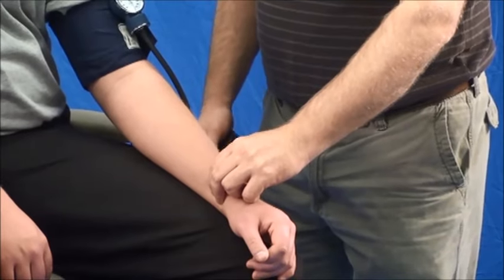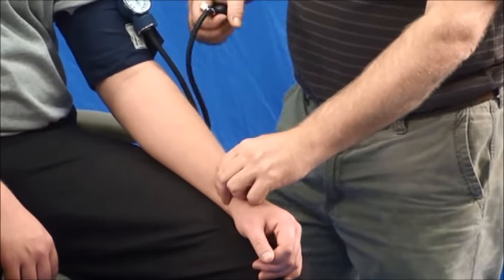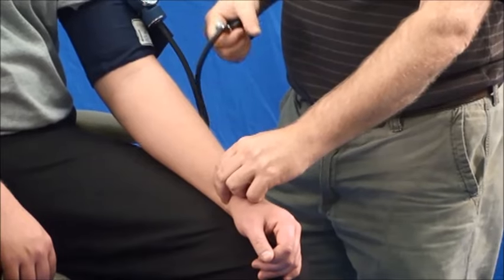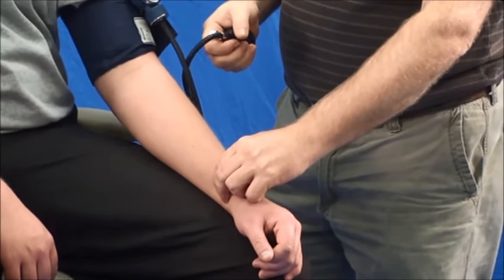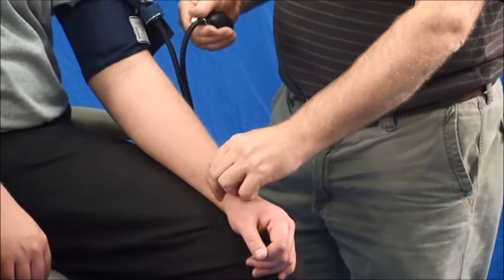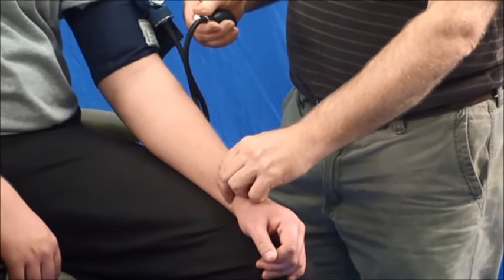Feel for a pulse again, a radial pulse. As I pump it up, I will continue to feel it and at the point where it goes away, I'll add about 20 or 30 millimeters of mercury and then slowly allow the air to release.